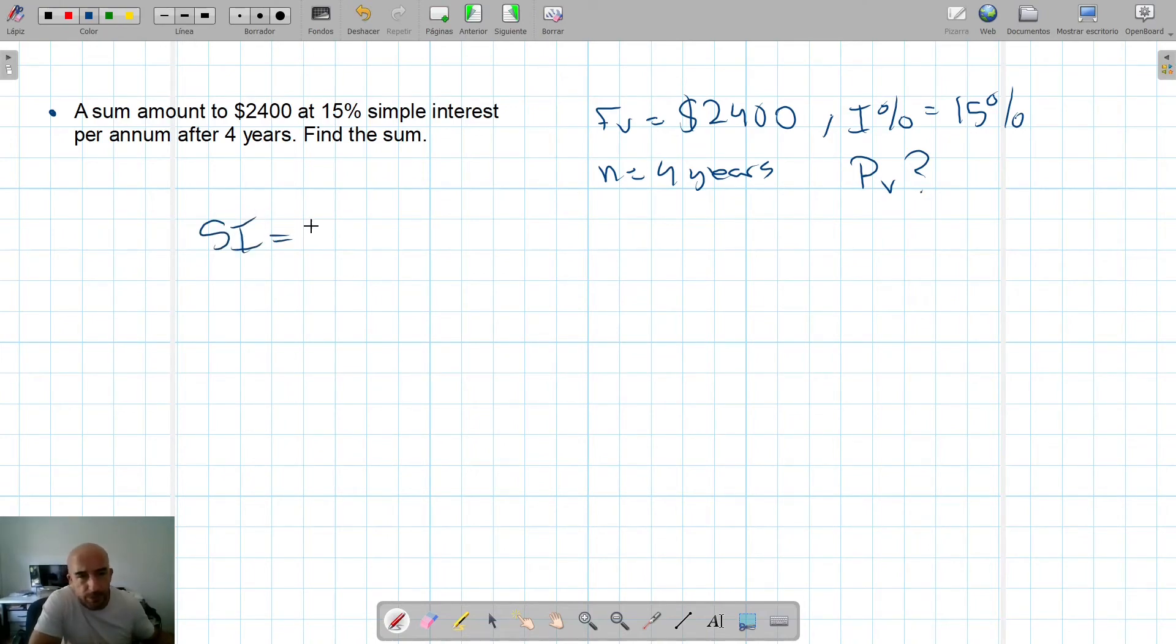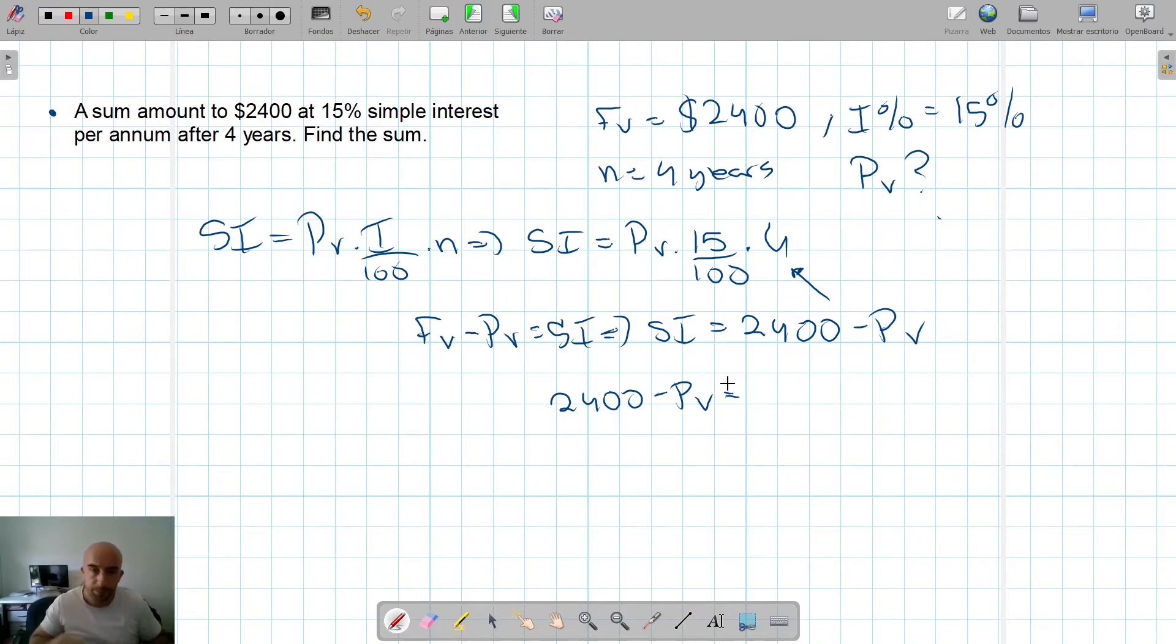How do we do this? Well, simple interest equals principal value times I divided by 100 times N. So how do we do it? Let's look at what we have. We have that the simple interest, which I don't know, is principal value, which I don't know, times 15 divided by 100 times 4. And we have that final value minus principal value equals simple interest. So, simple interest, for example, 2,400 minus PV. If we insert this, the second equation into the first one, we have that 2,400 minus PV equals PV times 0.6 plus PV.